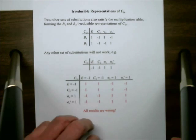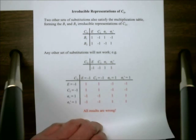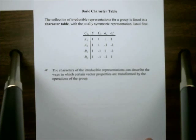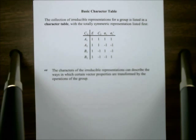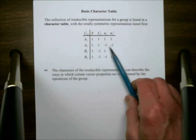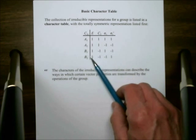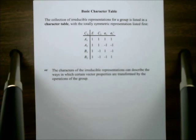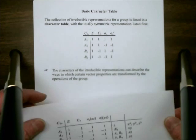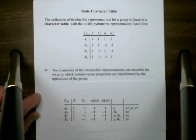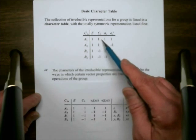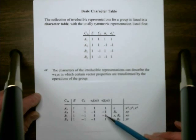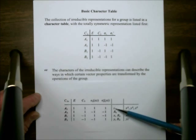This is all information that is gathered together in what we call a character table. Appendix C of your text has character tables for all the groups that we might encounter in real molecules. So far, what we have is a rudimentary character table that just shows the characters and their Mulliken designations as individual representations.